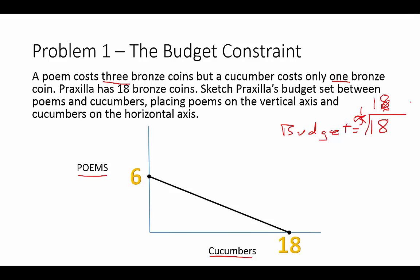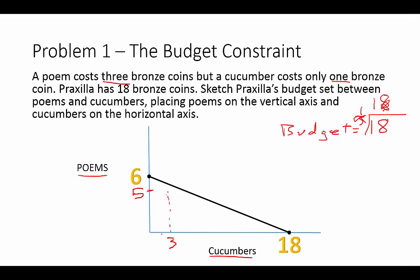Now we can identify different combinations along the budget constraint. Going down to 5 poems, we can consume 3 cucumbers. Continuing: at 4 poems we get 6 cucumbers, at 3 poems we get 9, at 2 poems we get 12, at 1 poem we get 15, and at zero poems we can consume all 18 cucumbers. Those are our different combinations on the curve.